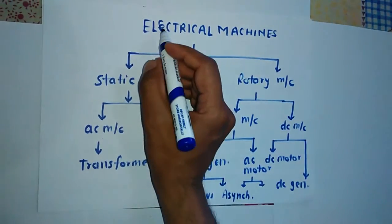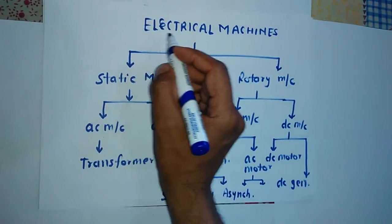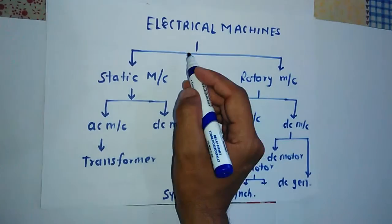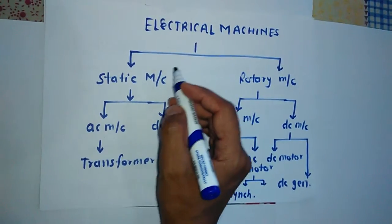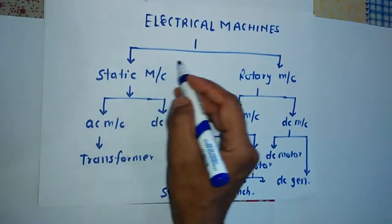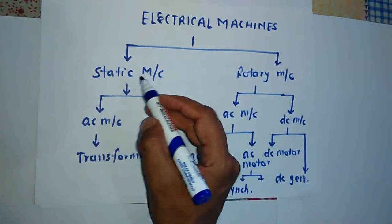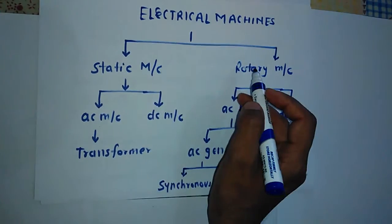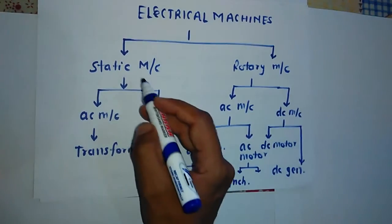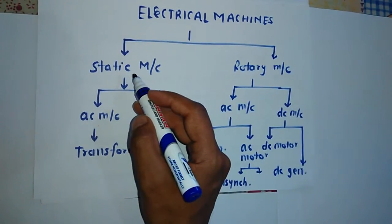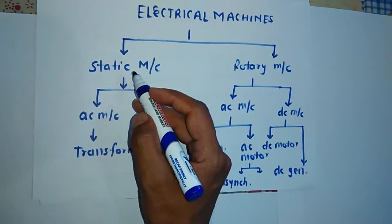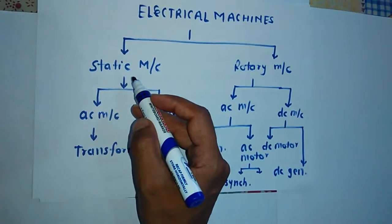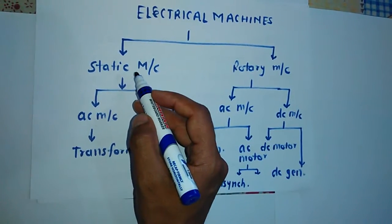Hello friends, today we are discussing about electrical machines. Electrical machines have two broad types of classification. One is static machines and another is rotary machines. Static machines are those which have stationary devices with no rotating parts.